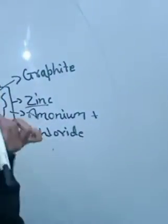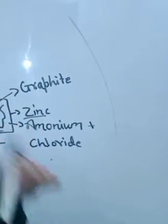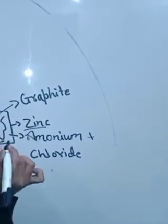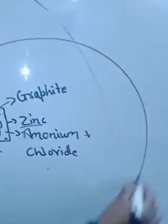First, the part of ammonium goes to graphite and the negative part of chloride goes to zinc. If we connect a wire metal in it.